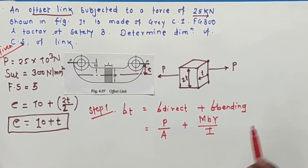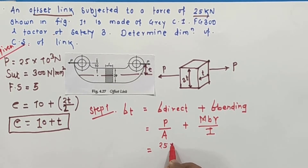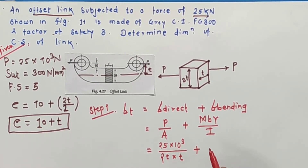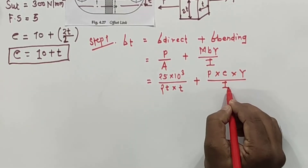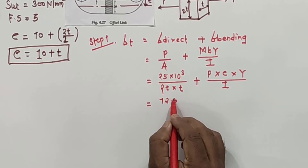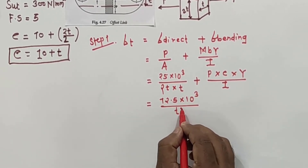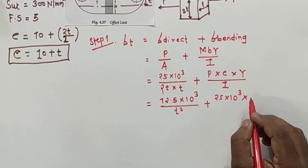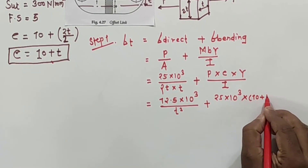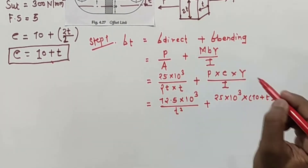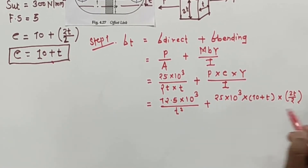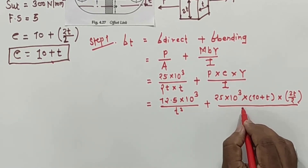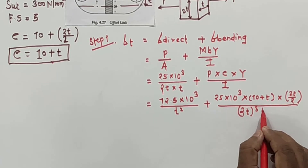For the rectangular cross section, P is the force 25×10³ divided by area 2T×T, plus bending moment — which is force into eccentricity — multiplied by Y, divided by moment of inertia. The neutral axis distance Y for 2T is 2T divided by 2, that is T. The moment of inertia is T×(2T)³ divided by 12.